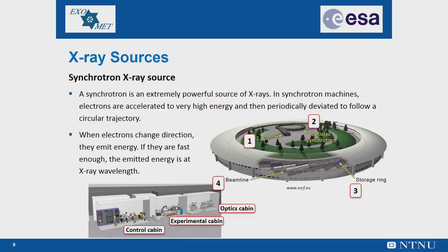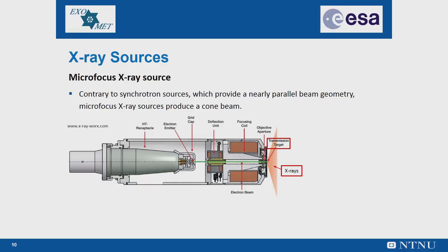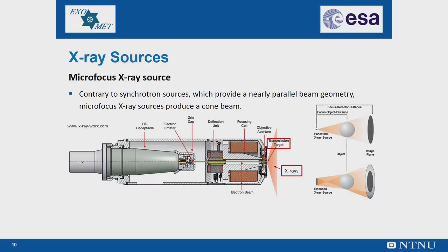Contrary to synchrotron sources, which provide a nearly parallel beam geometry, micro-focus X-ray sources produce a cone beam. The most important parts of the micro-focus X-ray source are the transmission target and the focal spot, or source size. A focused electron beam strikes the transmission target. Depending on the specific application, transmission targets can be made of different kinds of materials, thus selecting a specific X-ray emission spectrum. The size of the focal spot defines the sharpness of the resulting X-ray image; the bigger the focal spot, the higher the geometric unsharpness, meaning that high-resolution X-ray analysis requires an appropriately small focal spot.